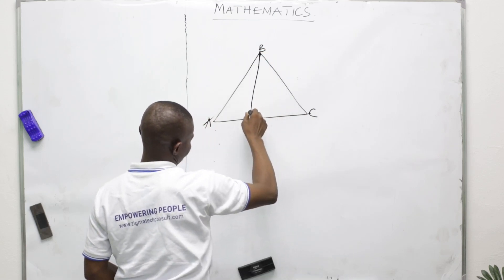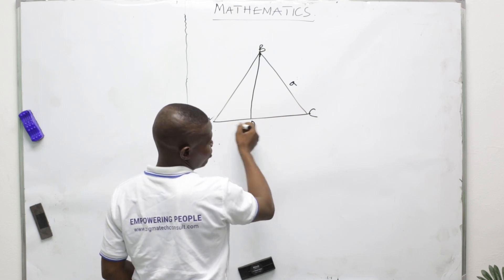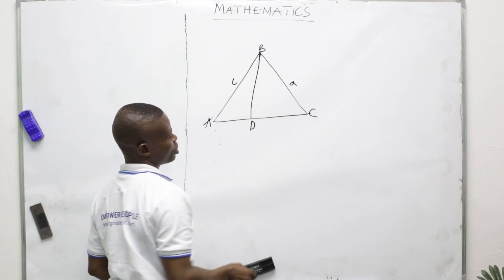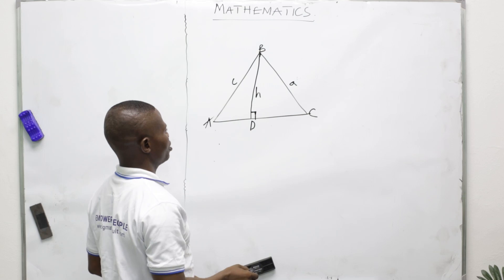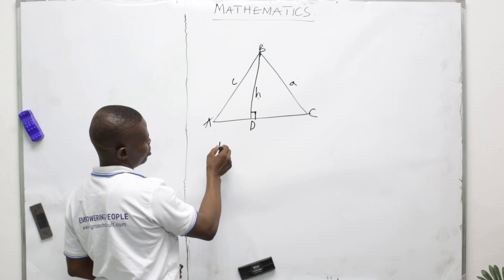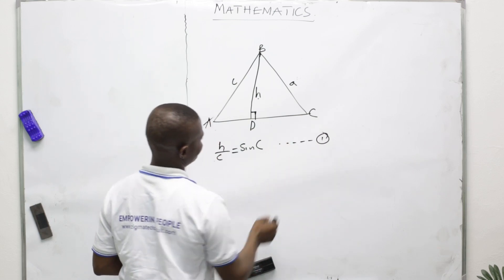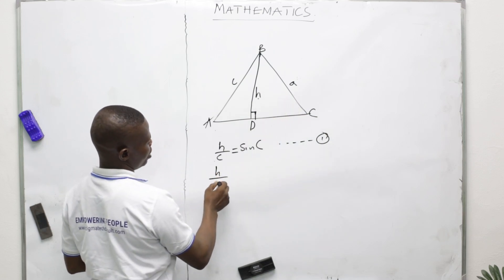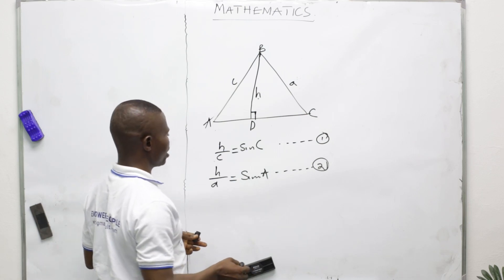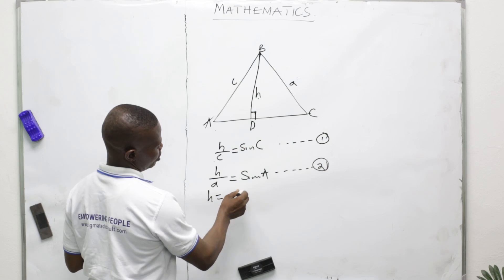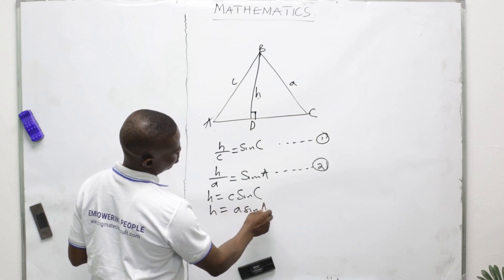To derive the sine rule, drop a perpendicular from vertex to form a right angle. Call the height h. Since this is 90 degrees, the height of this triangle is h. So h over c equals sine C — that is equation one. And h over a equals sine A — equation two. Therefore h equals c·sin C, and also h equals a·sin A.